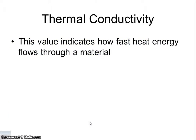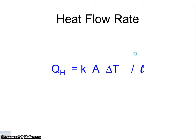Thermal conductivity — we've talked about conductivity before. When you see that word, basically you know that whatever you're talking about is going to flow through easily. Things that are generally conductive for electricity are also going to be conductive for heat. This value indicates how fast energy flows through a material.